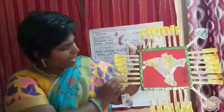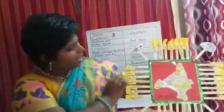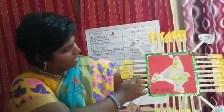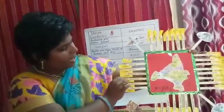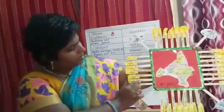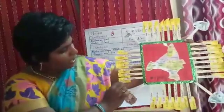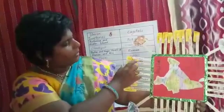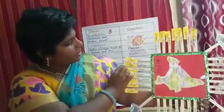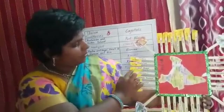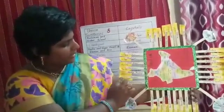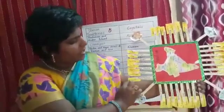Rajasthan — Jaipur. Bihar — Patna. Sikkim — Gangtok. Assam — Dispur. Arunachal Pradesh — Itanagar. Nagaland — Kohima. Manipur — Imphal. Mizoram — Aizawl. Tripura — Agartala. Meghalaya — Shillong. West Bengal — Kolkata. Jharkhand — Ranchi. Madhya Pradesh — Bhopal. Gujarat — Gandhinagar. Maharashtra — Mumbai.